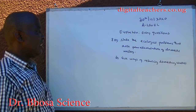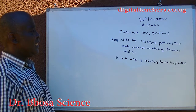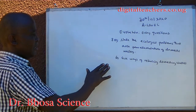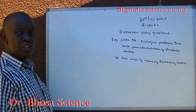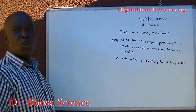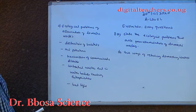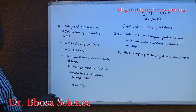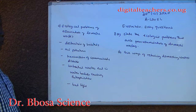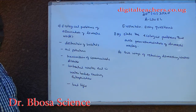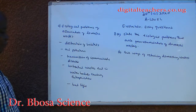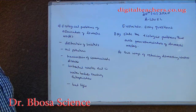Number 8. A. State the ecological problems that arise from accumulation of domestic wastes. A. Ecological problems of accumulation of domestic wastes include destruction of habitats, air pollution, transmission of communicable diseases. Untreated wastes end up in water bodies causing eutrophication.